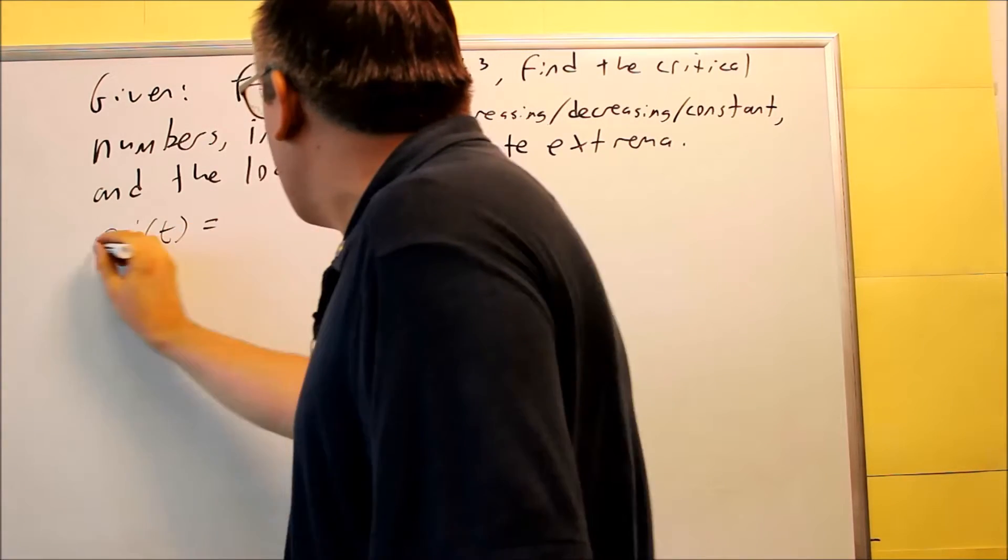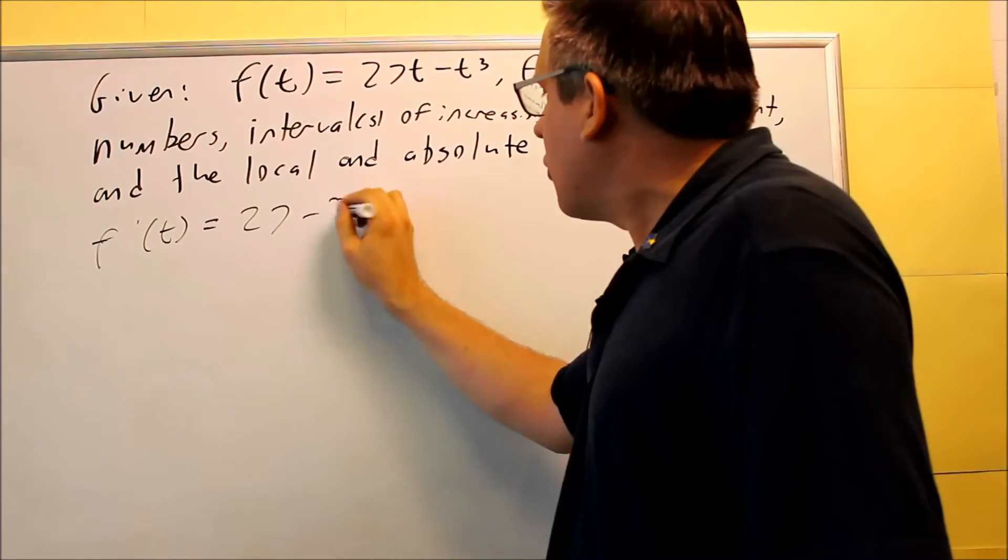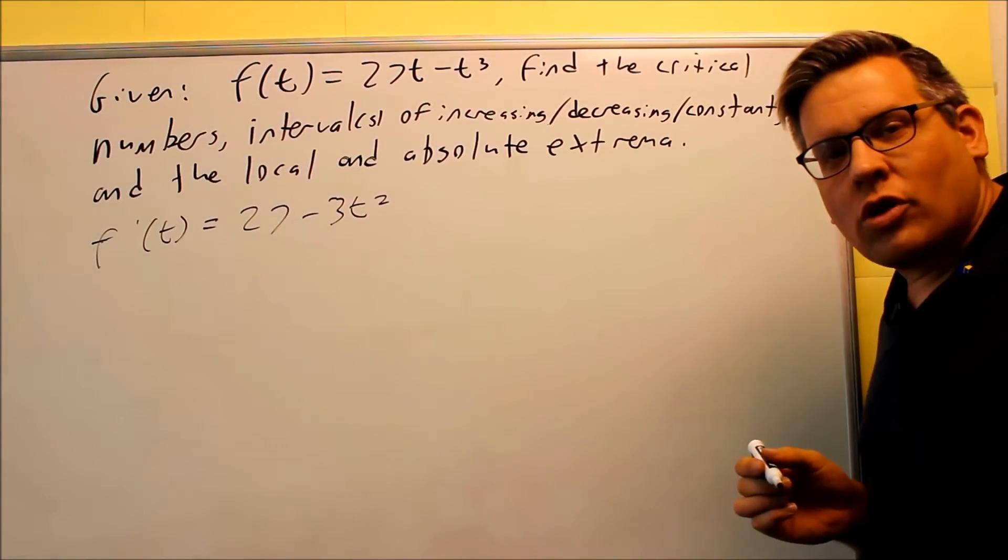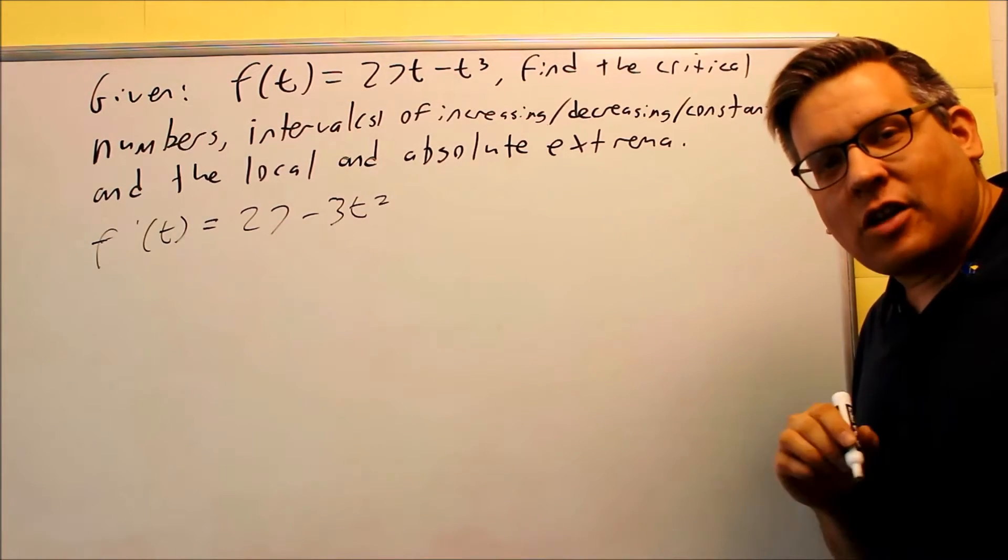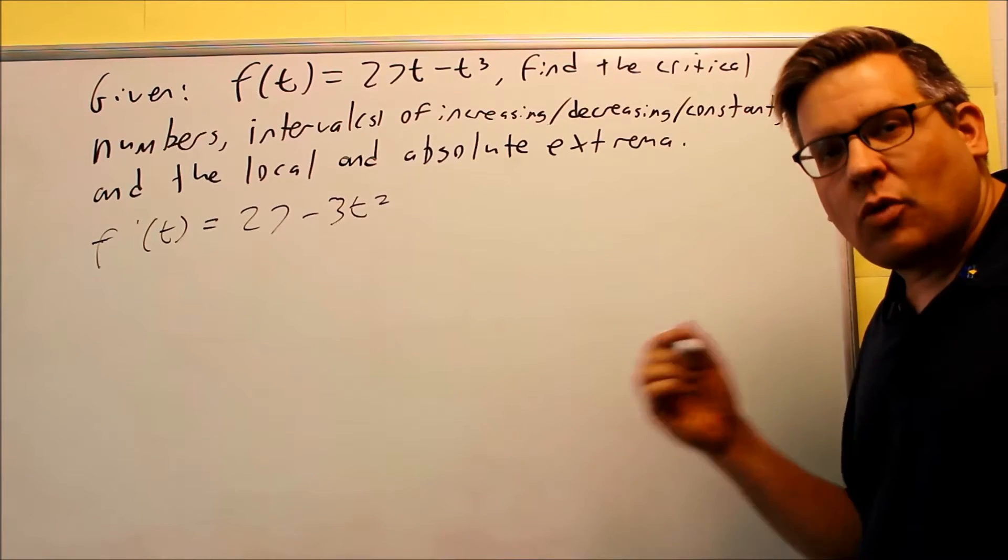f'(t) is going to equal 27 minus 3t². To find a critical number, we look for where the first derivative is undefined. That's one way, but we're not going to find any values here because we have a polynomial again. It's always continuous.